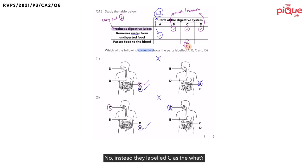Instead, they labeled C as the what? They labeled C as the mouth. So, C is definitely wrong. So, option three is out. Now, based on this, what should be the only possible answer then? The correct answer should be option one.